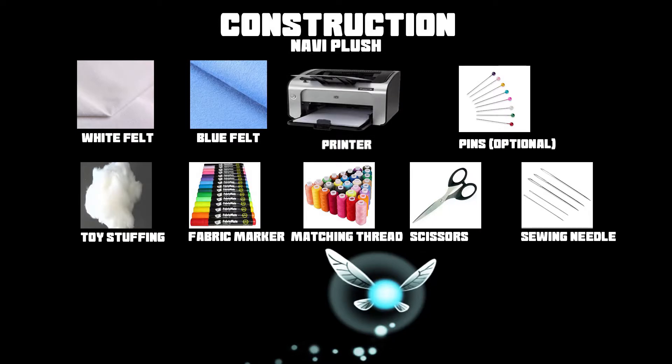Here's a list of everything you'll need. If you want the wings to be extra Navi-like you can trade the white felt for a transparent plastic material and use a see-through fishing line to blend the thread.